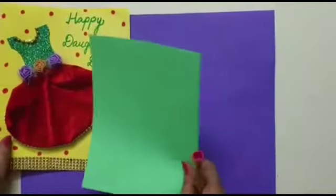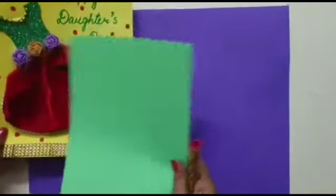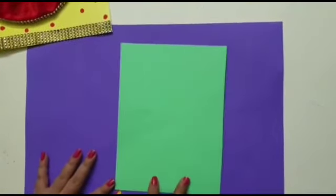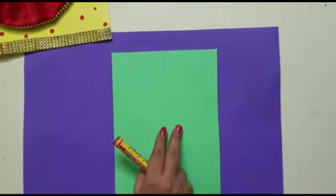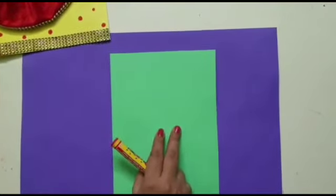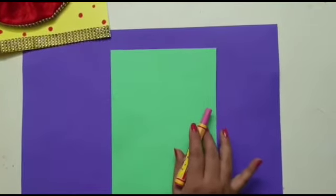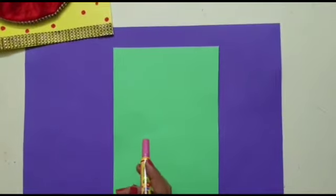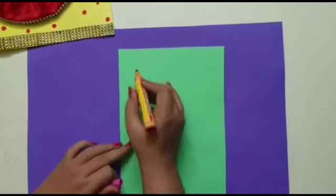Now we will take a small piece of paper of different color according to our card. So here we will write a quote for daughter. Dear daughter, your love has never fallen short. You are a blessing from above. You are my beautiful treasure of love. You can write any quote, whatever you like.